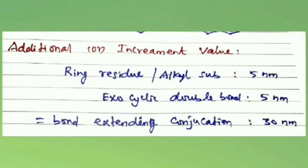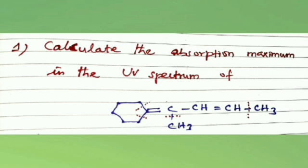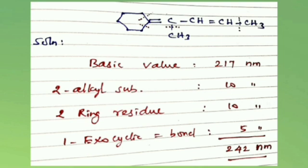Let's see some examples. First problem: calculate the absorption maximum in the UV spectrum of a compound. It is an ordinary diene system, so the basic value is 217 nm. There are two methyl groups attached, adding 2 × 5 nm = 10 nm. Two ring residues also contribute 2 × 5 nm = 10 nm. The total lambda max is 217 + 10 + 10 + 5 = 242 nm.